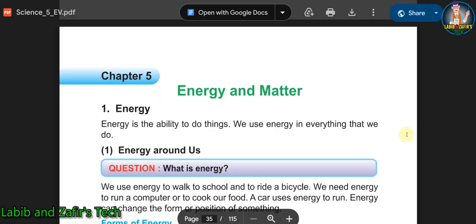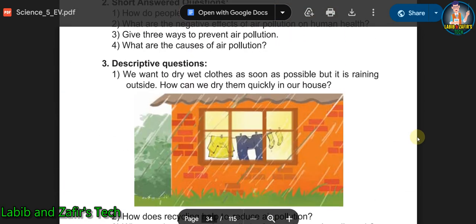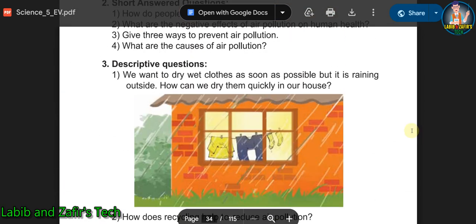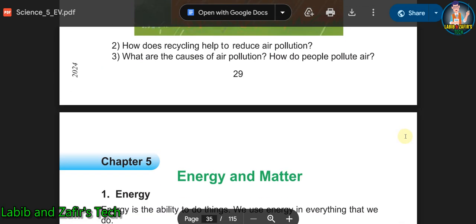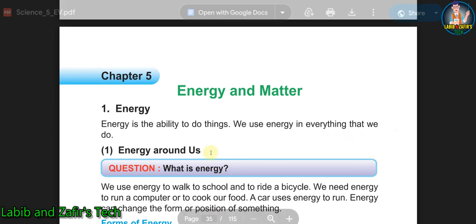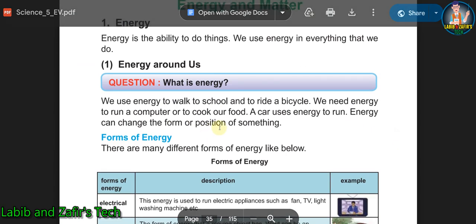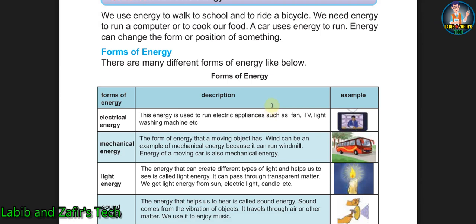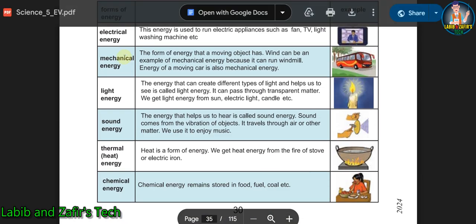Students, now we are in Chapter 5: Energy and Matter. Our last video was on Chapter 4—if you want to see that video, you can get it from the description box. Now students, at first in this chapter you will be able to know what is energy and energy around us, what are the forms of energy, and there are some examples like electrical energy, light energy, thermal energy, chemical energy, etc.